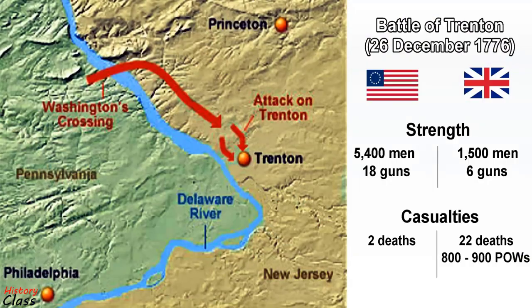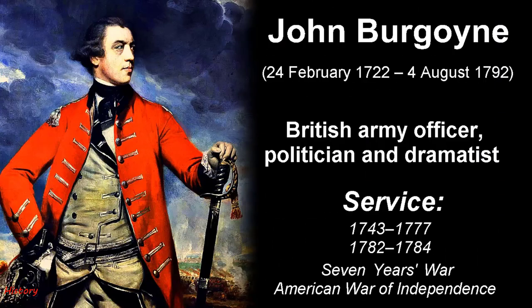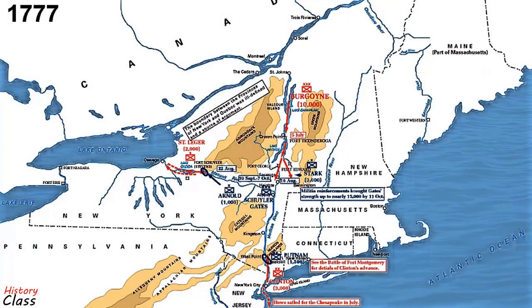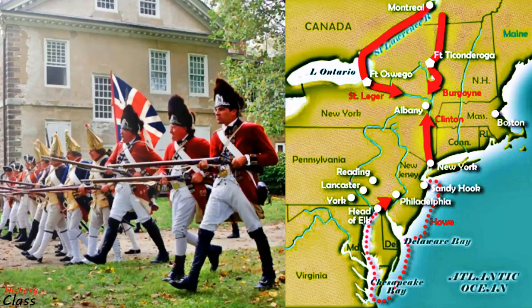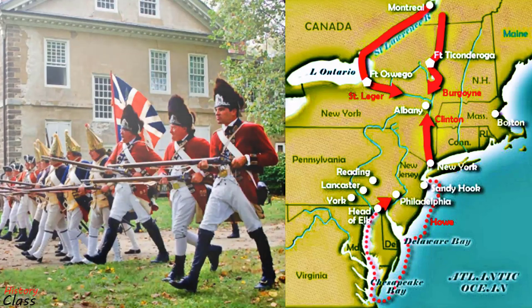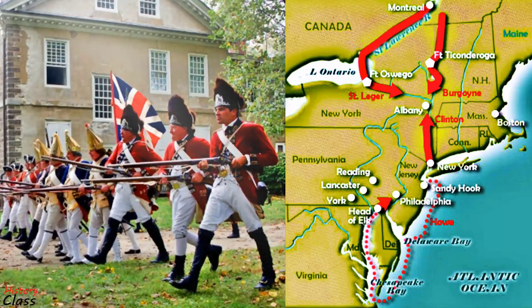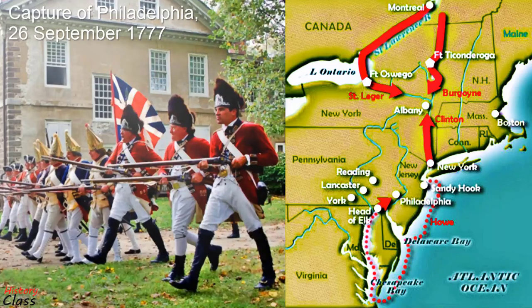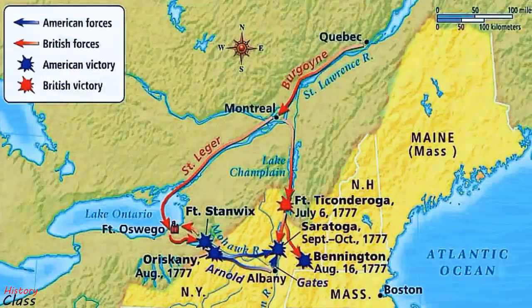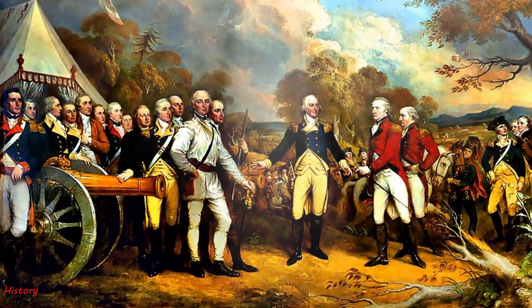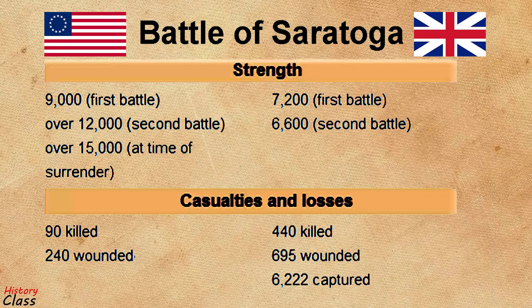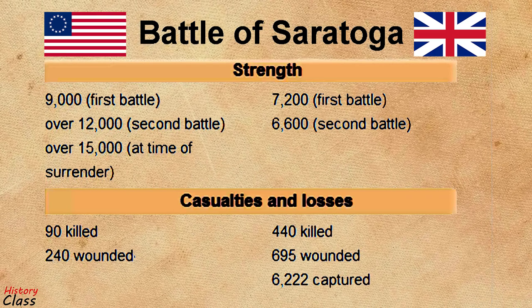Washington captured a Hessian force at Trenton and drove the British out of New Jersey, restoring American confidence. In 1777, the British sent a new army under John Burgoyne to move south from Canada and to isolate the New England colonies. However, instead of assisting Burgoyne, Howe took his army on a separate campaign against the revolutionary capital of Philadelphia. Burgoyne outran his supplies, was surrounded, and surrendered at Saratoga in October 1777.